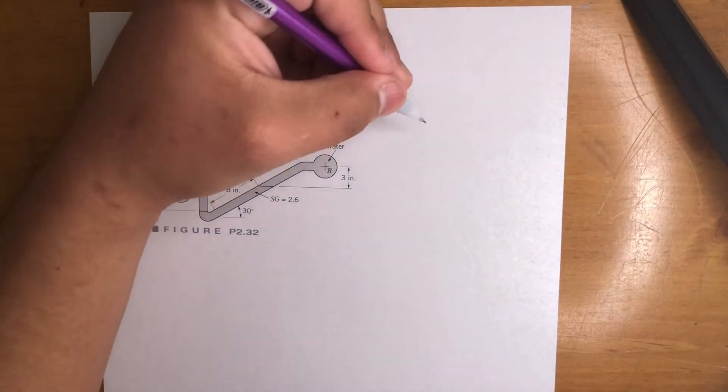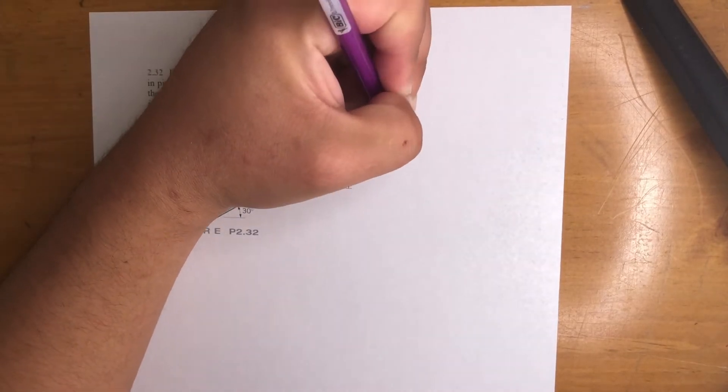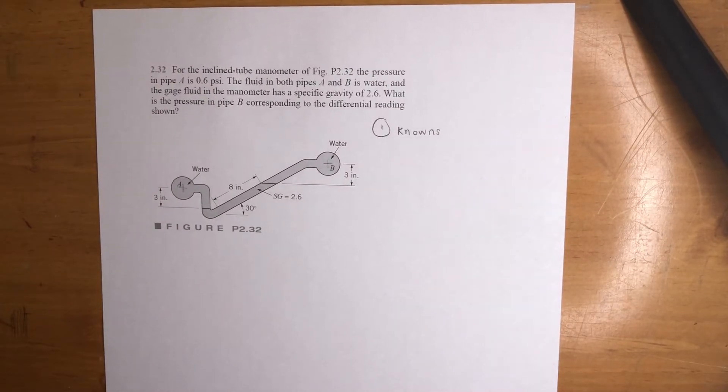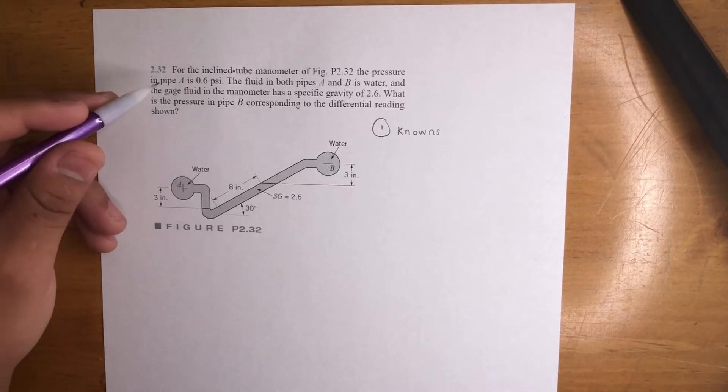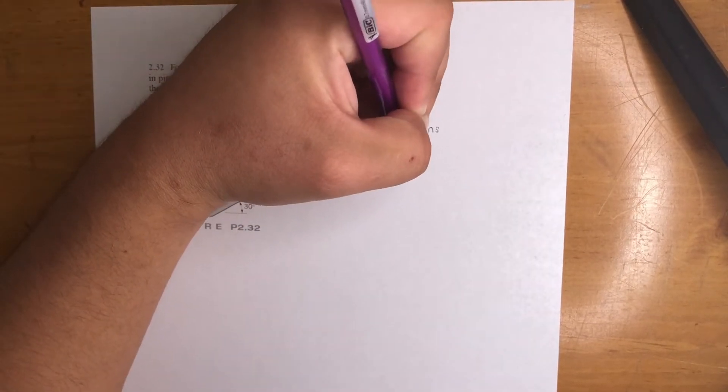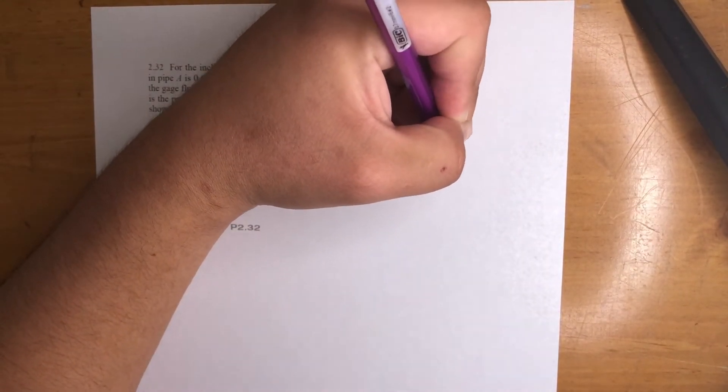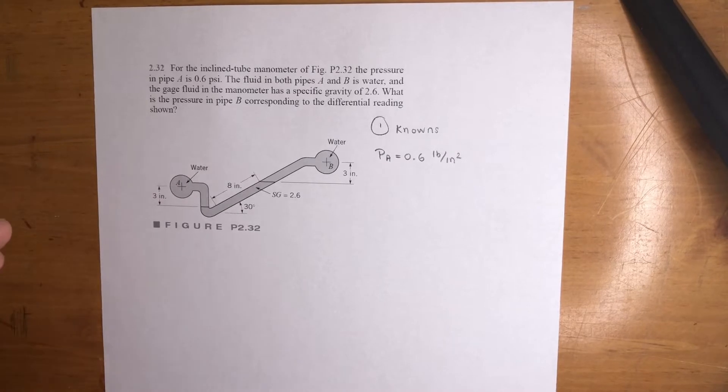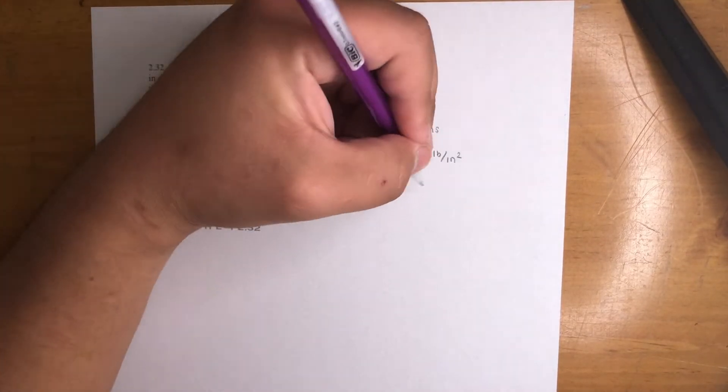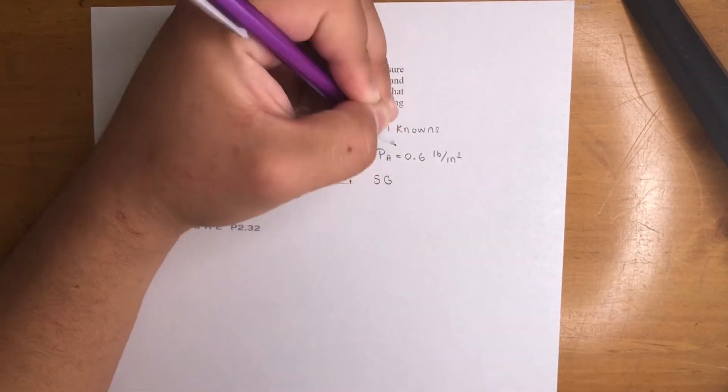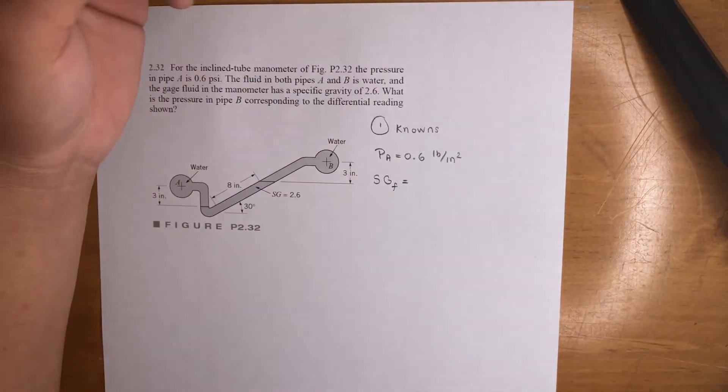So always, first thing is knowns. Let's see, we know it's water, right? So let's start with the question first. There's pipe A, pressure is 0.6 psi, so we're dealing with pound per square inch. Nothing's in feet, so we're good. What else do we know? There's a specific gravity of this fluid right here. Let's see, SG of fluid is equal to 2.6.